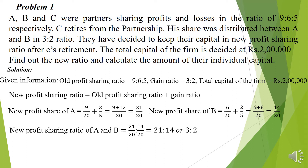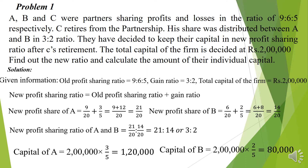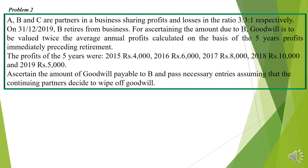Now let us find out the capital of each individual partner. Capital of A = 2 lakh × 3/5 = 1 lakh 20,000. Capital of B = 2 lakh × 2/5 = 80,000. This is the solution and you can expect this as a Section A question.